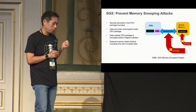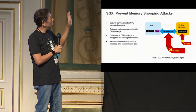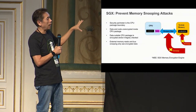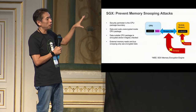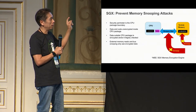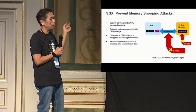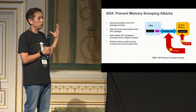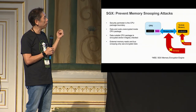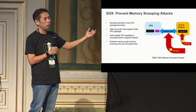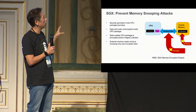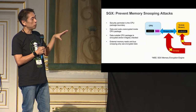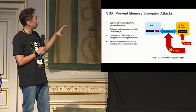What SDX actually prevents is snooping on the bus — memory bus or system memory. We have special memory for the enclave. Within a CPU package the data is not encrypted, it's clear, but if you look at the system memory side, it's all encrypted when using enclave. So whatever data transfers on the system bus will be basically prevented.